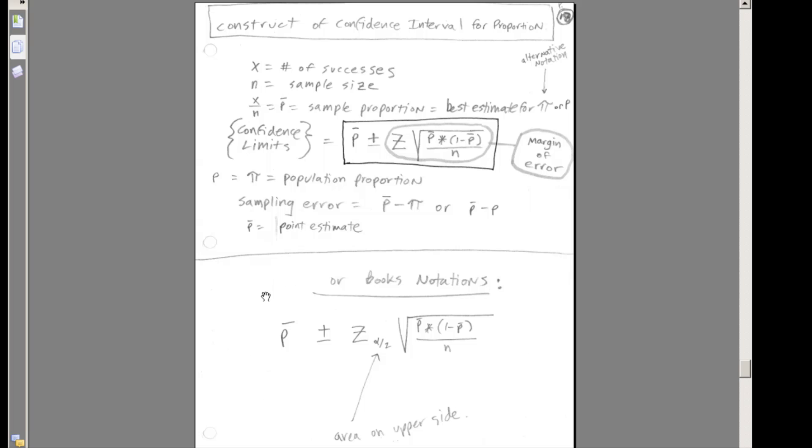We want to talk about how to estimate a population proportion by building a confidence interval. Here's our formula, and it looks very similar to the formulas we used for sigma known and sigma not known when we used the z and t distribution. Here we're going to use the z distribution with our NORM.S.INVERSE functions. We have a sample proportion called p-bar plus or minus some margin of error: z sub alpha divided by 2 times the standard error, square root of p-bar times 1 minus p-bar divided by n.